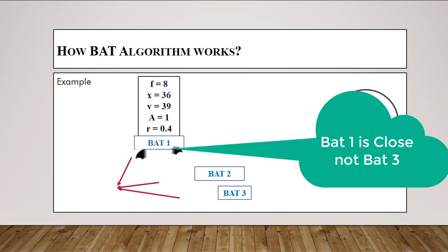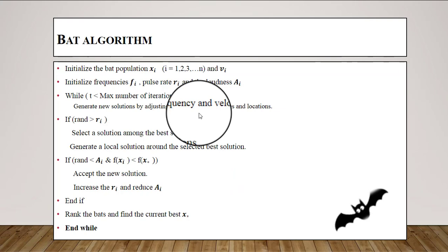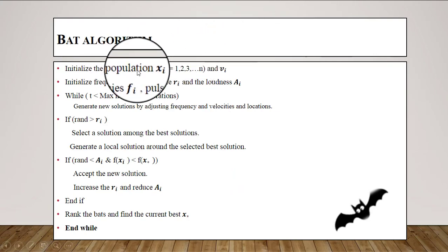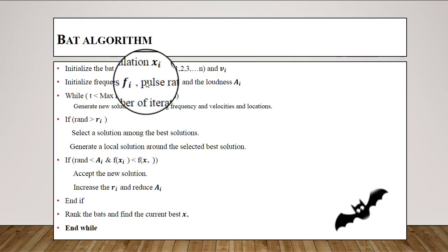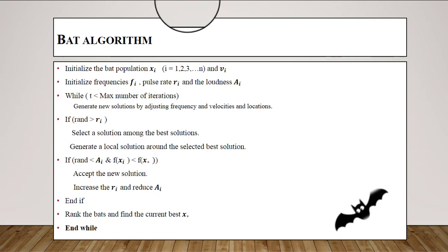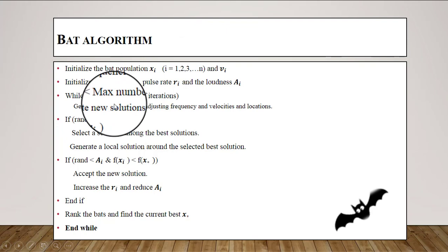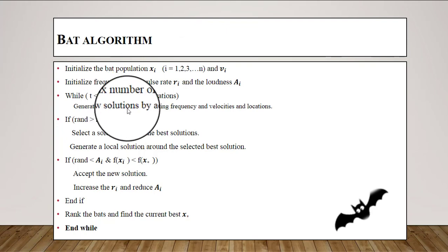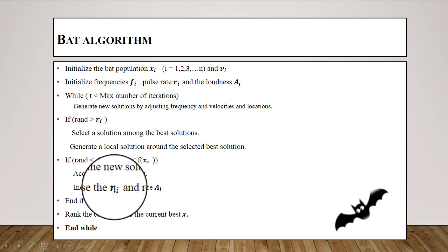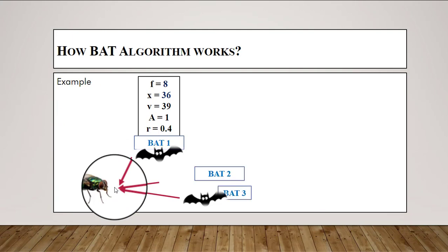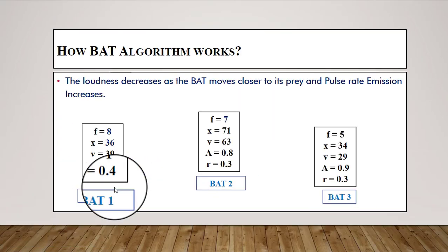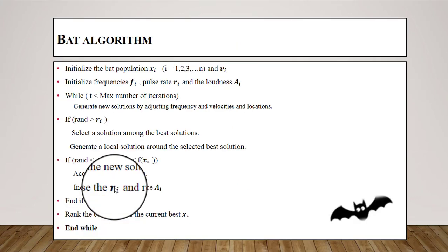To summarize the bat algorithm: first, initialize the bat population; then initialize frequency, pulse rate, and loudness with random values; check the iteration condition — if true, generate a new solution by updating frequency, velocity, and position; then check the pulse rate condition to select the best bat; generate a local solution and check the loudness condition to accept it. The bat algorithm is used for optimization problems and finds the bat closest to the target as the best solution.